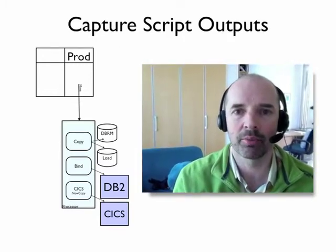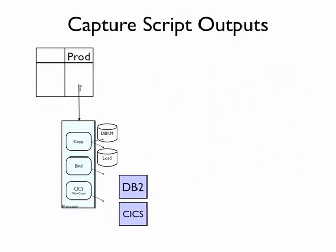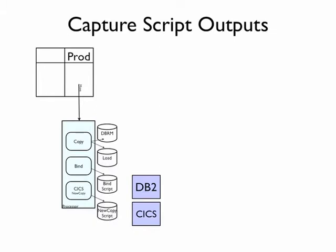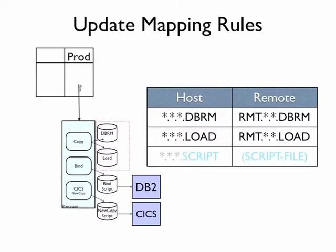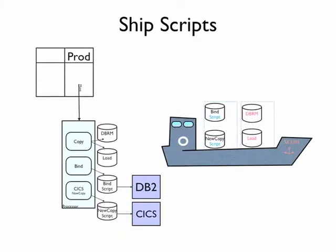Let's look now at what happens when we want to add the scripts into the process. The first thing is we need to modify the process that builds — or is currently doing our bind and new copy — to insert steps where we will save the script or the syntax used to do these. Then we update our mapping rules to identify these script files, but this time, instead of a remote name, we're going to give it the special symbol script file. This identifies the scripts, which can then be packaged and shipped alongside your objects.